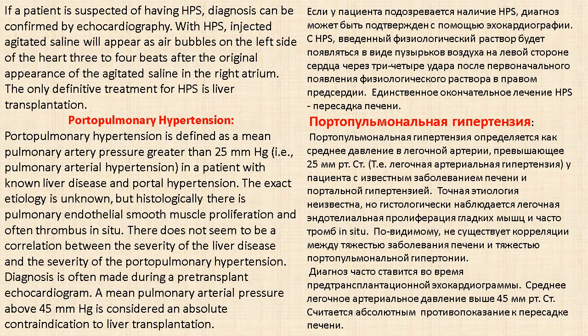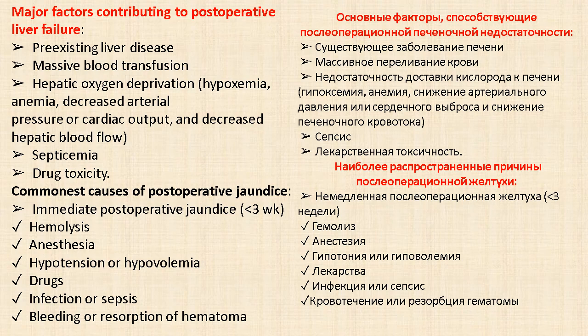Portopulmonary hypertension is defined as mean pulmonary artery pressure greater than 25 mmHg in a patient with portal hypertension. The exact etiology is unknown. Histologically, there is pulmonary endothelium smooth muscle proliferation and often thrombus in situ. There does not seem to be a correlation between the severity of liver disease and the severity of portopulmonary hypertension. Diagnosis is often made during a pre-transplant echocardiogram. A mean pulmonary arterial pressure above 45 mmHg is considered an absolute contraindication to liver transplantation.